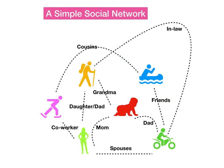First, let's look at an example of a simple social network among six people. There's a baby, his mom, his dad, his grandma, the mom's co-worker, and the dad's friend. In this network, the co-worker and the dad's friend are actually cousins.